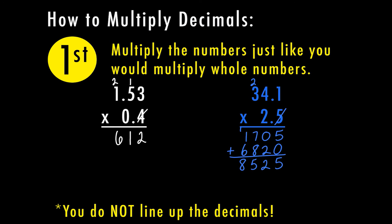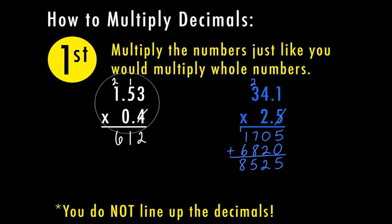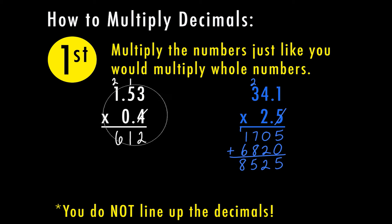One of the things with multiplying decimals that makes it really simple is you don't have to line up your decimal. In the first problem we have 53 hundredths and 4 tenths, and those are not in the same position — so your decimal is not lined up, and that's okay. With adding and subtracting you have to line them up, but multiplying you do not.